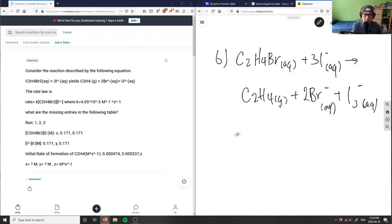Okay, so the rate law here is R equals K times C2H4Br2 times I minus, where K equals 4.05 times 10 to the negative 3 moles per second, or molarity per second. It says, what are the missing entries in the following table?